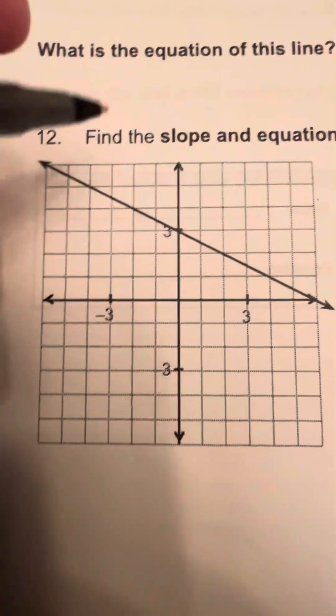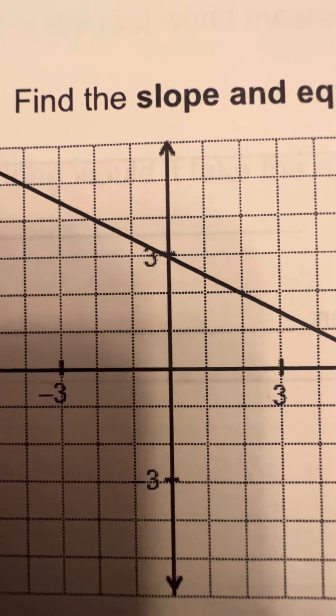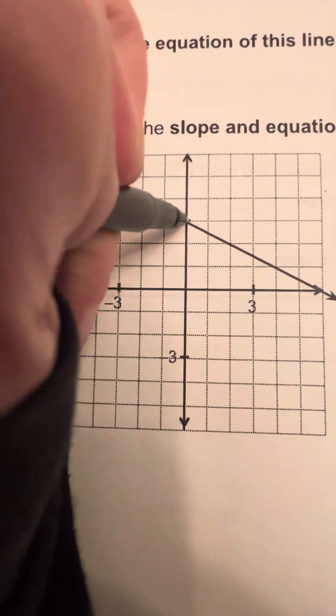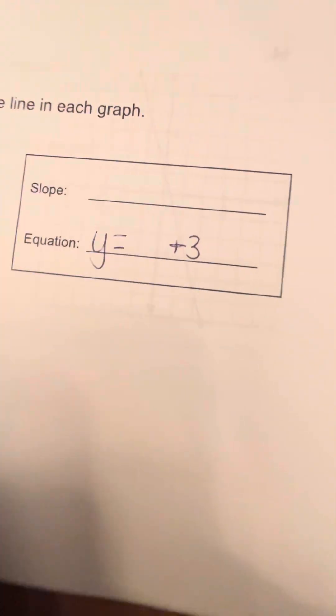So the first thing I'm going to do is, since I have to come up with the equation, look straight up at that y-intercept, which is crossing through a positive 3 right here. So we know that when we're writing the equation, it's y equals mx plus b. So we have the y equals. We already have the b now. We know the b is a positive 3, so I'm going to put plus 3 there.